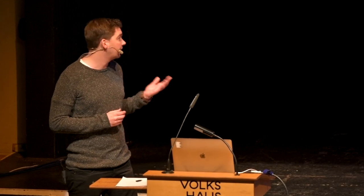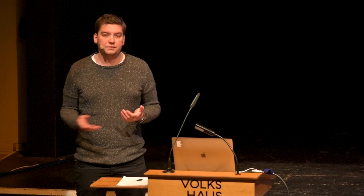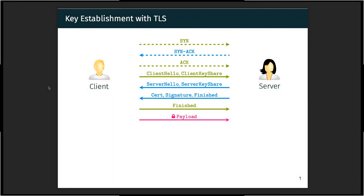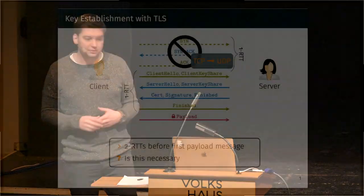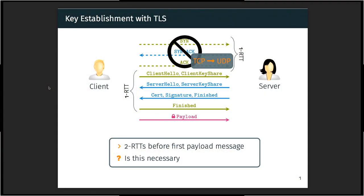Essentially, if you want to send some kind of encrypted payload data between a client and a server, you usually have to establish a key first, and therefore you have to send messages back and forth in order to eventually have a key which can then be used to encrypt payload data. If you're using TCP, you even have to send more messages before eventually being able to send encrypted data. One obvious change would be to switch from TCP to UDP in order to skip one round trip.